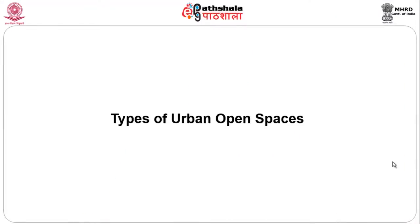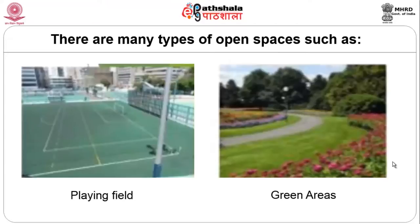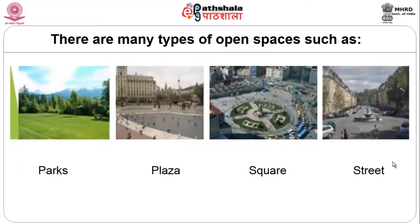The types of urban open spaces include waterways, playgrounds for different age groups, playing fields — which are important nowadays for students to enjoy physical activity rather than sitting at a computer — as well as greenery areas, parks, plazas, squares, streets, different types of squares, plazas, and parks at different scales.